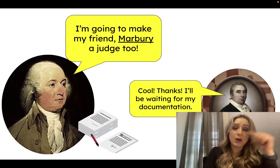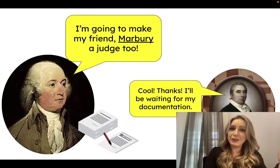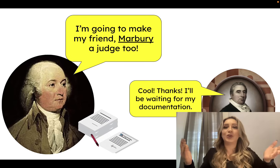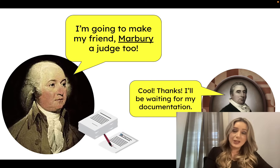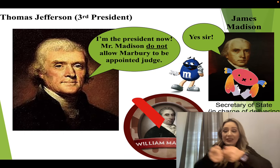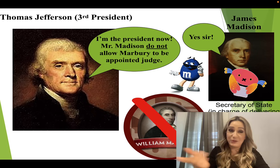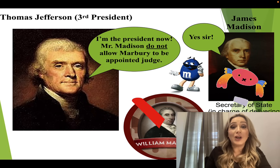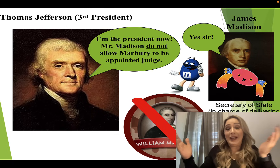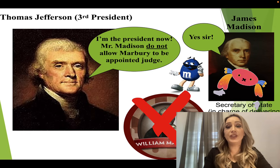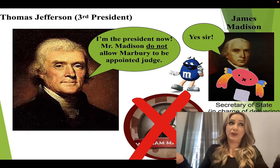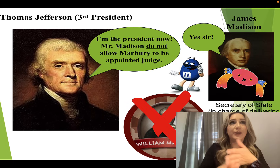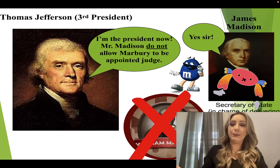He tells one of his friends - Marbury - that he's going to make him a judge. Marbury just needs to remember he's a Federalist and stay focused on Federalist beliefs when making decisions. Marbury is waiting for his commission, the paperwork that officially makes him a judge. James Madison is in charge of delivering those commissions. Madison, a Democratic Republican, goes to Thomas Jefferson, who tells him not to deliver those commissions. Madison follows those orders and doesn't deliver them. Marbury spends the whole night waiting for that paperwork, and he never receives it.